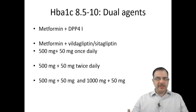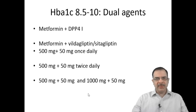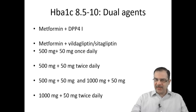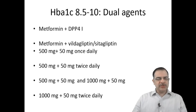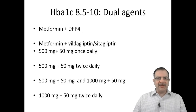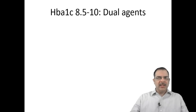If glycemic control is still not achieved, give metformin 500 mg plus Vildagliptin 50 mg in the morning, and metformin 1000 mg plus Vildagliptin or Sitagliptin 50 mg at nighttime — increasing the nighttime metformin dose. If still uncontrolled, make it metformin 1000 mg twice a day with Vildagliptin or Sitagliptin 50 mg twice a day, or sustained-release Vildagliptin/Sitagliptin 100 mg once a day at any meal — breakfast, lunch, or dinner. This is the up-titration sequence for DPP-4 inhibitor with metformin.